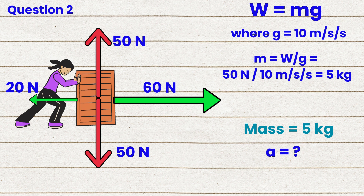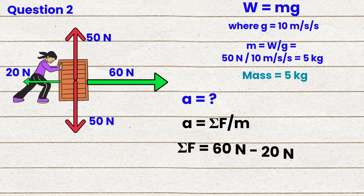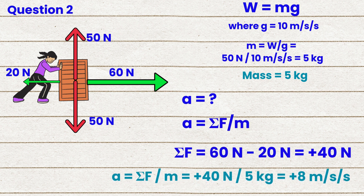Now let's find the box's acceleration. To find the acceleration, we use Newton's second law: A equals net force over mass. Net force equals 60 newtons minus 20 newtons, which equals +40 newtons. A equals +40 newtons divided by 5 kilograms, which equals +8 meters per second per second.